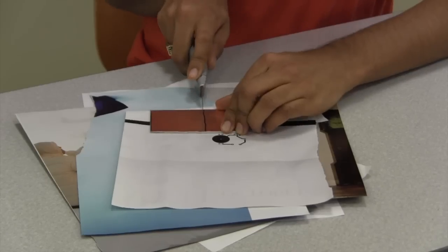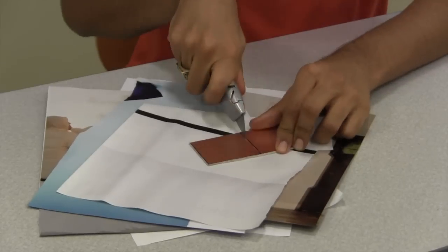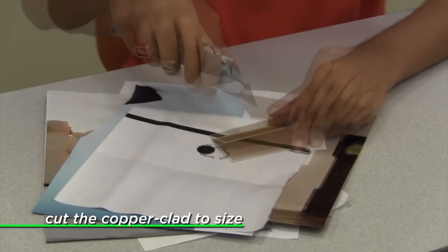We take a board that's covered with a thin layer of copper, called copper clad, which you can buy online or at an electronics hobby store. This board will end up being our actual circuit. First, we cut it to the same size as our paper circuit.